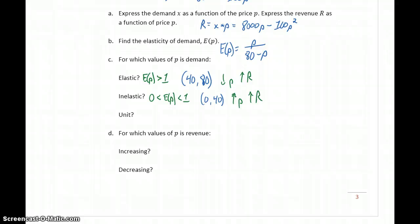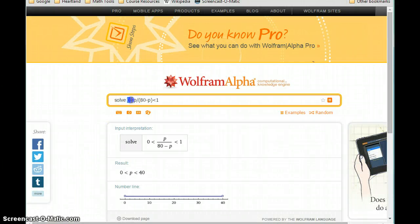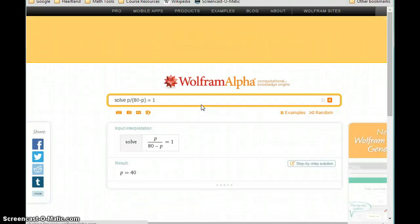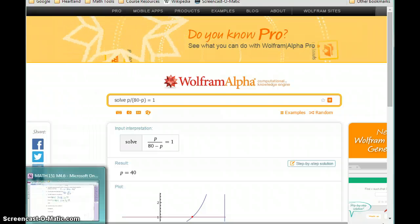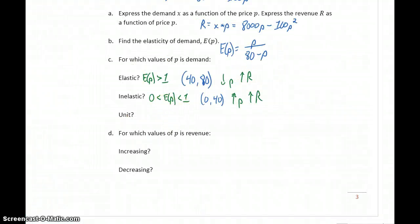And then we want to know when is demand unit. So unit demand means our elasticity function is exactly equal to 1. We can solve that elasticity function equal to 1 to get a price point of $40. So if we're asking for unit demand, we're asking when is the elasticity function equal to 1, and that is when p equals exactly $40. So that's that point where an increase in price results in exactly the same percentage change in demand. So increasing or decreasing price won't affect our revenue.